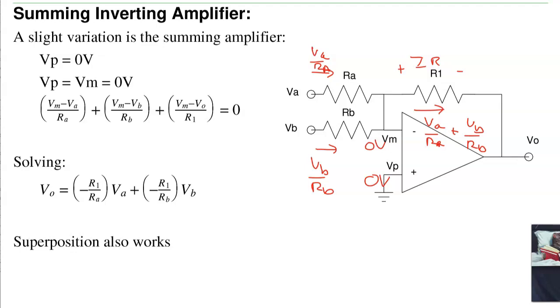You can also use superposition. Let VA be 0. This is 0. There's no current. That's just an inverting amplifier. Again, it's minus R1 over RB times VB. Let VB be 0. Solve for VA. I get minus R1 over RA times VA. Add the two together, and I get the total output. That's superposition.